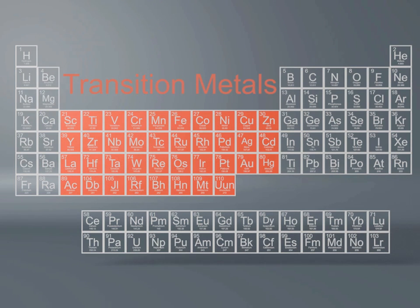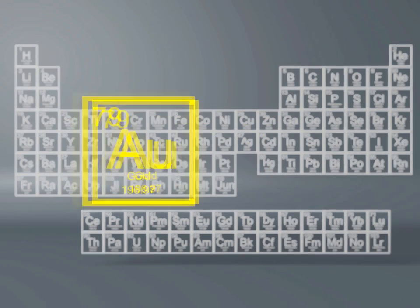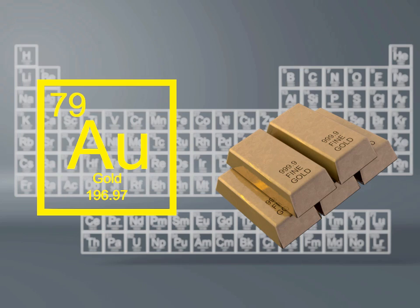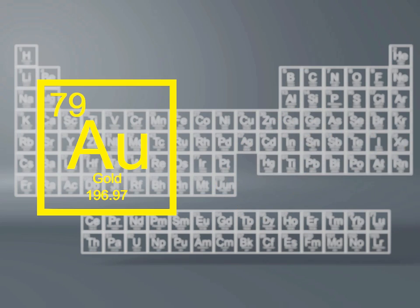The 38 elements in groups 3 through 12 of the periodic table are called transition metals. The transition metals contain most of the usable metals and are both ductile and malleable. For example, gold is not only a transition metal, but is also a precious metal.